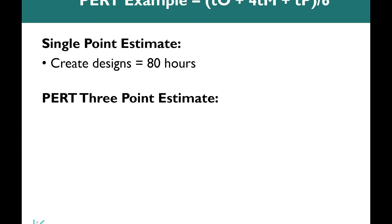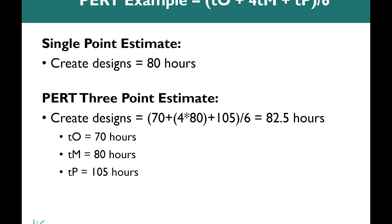PERT, however, using the formula that I just showed you, let's go ahead and calculate this out. So we take 70, our most optimistic. We add that to our most likely, which is again weighted by 4. 80 times 4 equals 320. And then we add on our most pessimistic or worst case scenario, which is 105 hours. Once we add those three numbers up, they equal 495. And then when we divide them by six, we get 82.5 hours.